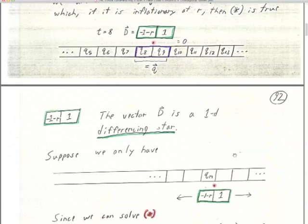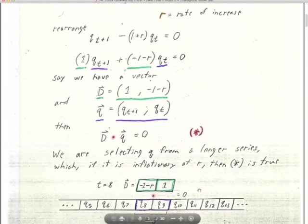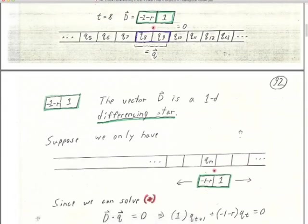As you can see, if this equation holds and I don't make any deposits or withdrawals, it's going to hold for any t. I take the same D vector and dot it against Q at 12 and Q at 13, and the dot product should still equal zero. This vector is kind of a cross-correlation or convolution filter running along this 1D Q vector — cross-correlating the long Q vector with this very short D vector. The result of the cross-correlation is always zero, so this D vector is called a 1D differencing star.